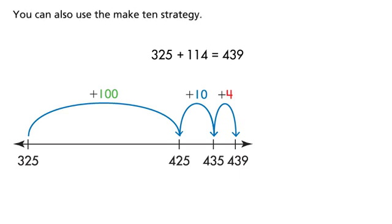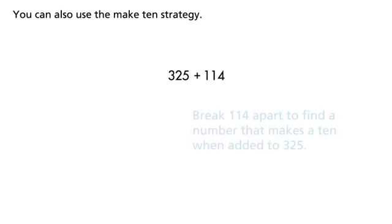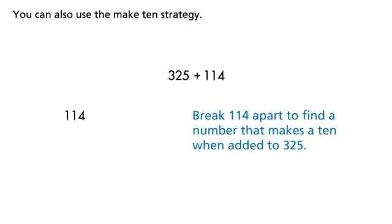You can also use the make 10 strategy. Break 114 apart to find a number that makes a 10 when added to 325.